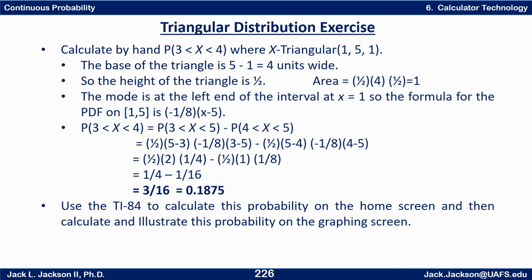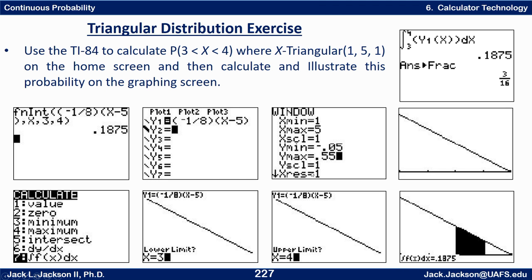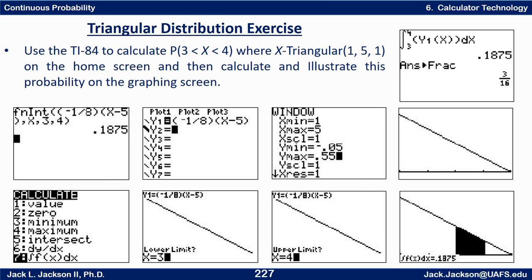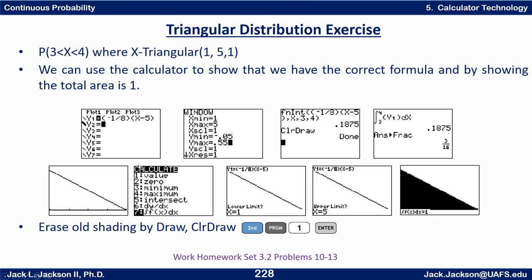That's how we do it by hand. To do the same thing with the calculator, you still have to come up with the formula: y = (−1/8)(x − 5). But once you have that formula, you can graph it from 1 to 5 and use the integral tools to compute and shade the area between 3 and 4.